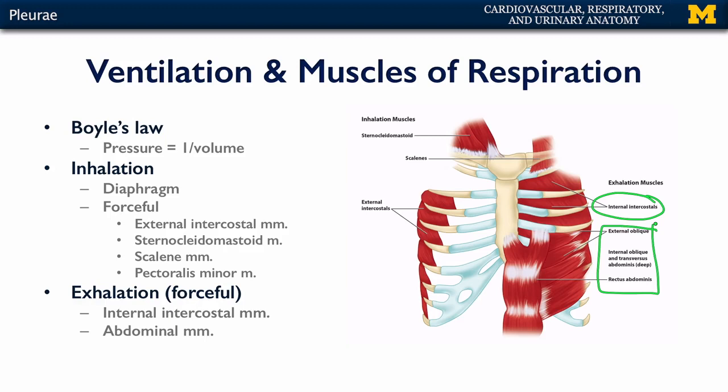As those abdominal muscles contract, they decrease the volume of the abdominal cavity, increasing the pressure. This applies pressure to the diaphragm to drive exhalation. Together, we have a means to move air in and out of the lungs by controlling the thoracic cavity through these muscles of respiration.